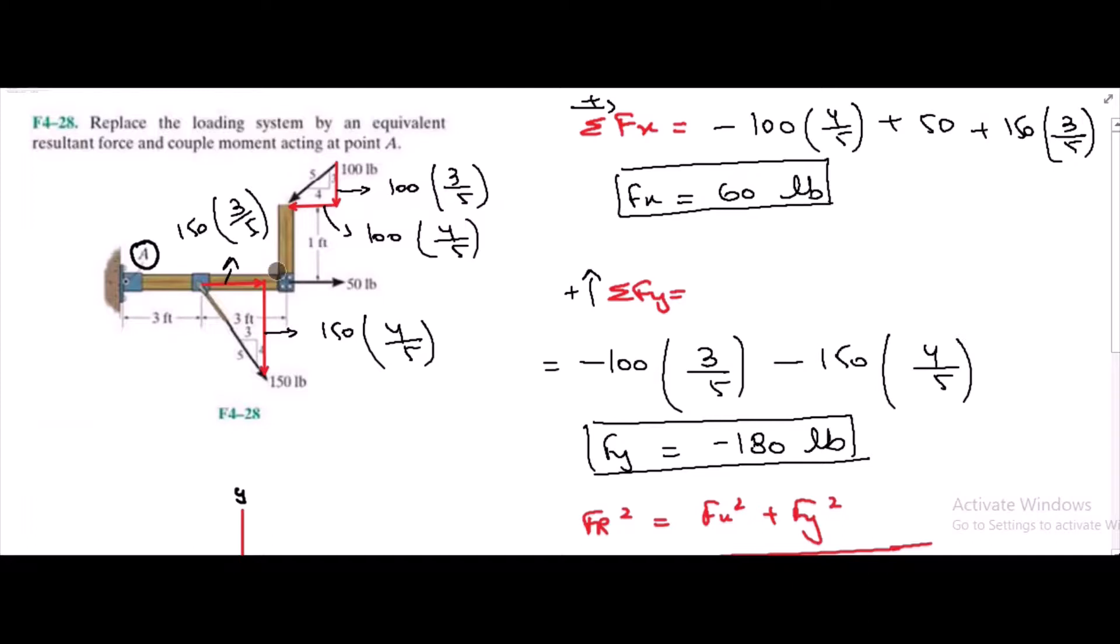We have three components which are causing the moment. For the vertical component of 100 lb force, I have the moment arm which is equal to 6 feet. For the horizontal component of 100 lb force, I have the moment arm of 1 foot. Similarly, for the vertical component of 150 lb force, I have the moment arm of 3 feet.